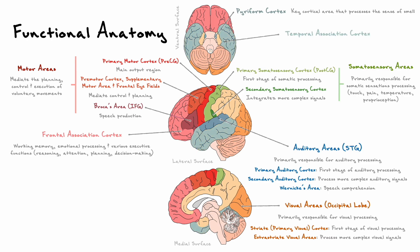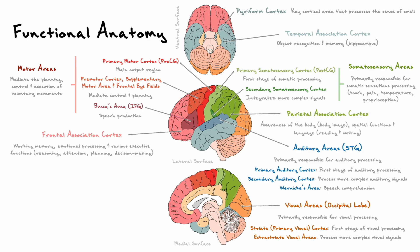In the temporal lobe, the temporal association cortex is primarily known for its ability to mediate object recognition and memory due to its close proximity to the hippocampus. In the parietal lobe, the parietal association cortex integrates from all the senses and is known to mediate our awareness of our bodies, many spatial functions, and also our ability to read and write language. Note that each association cortex mediates much more than these descriptors suggest.